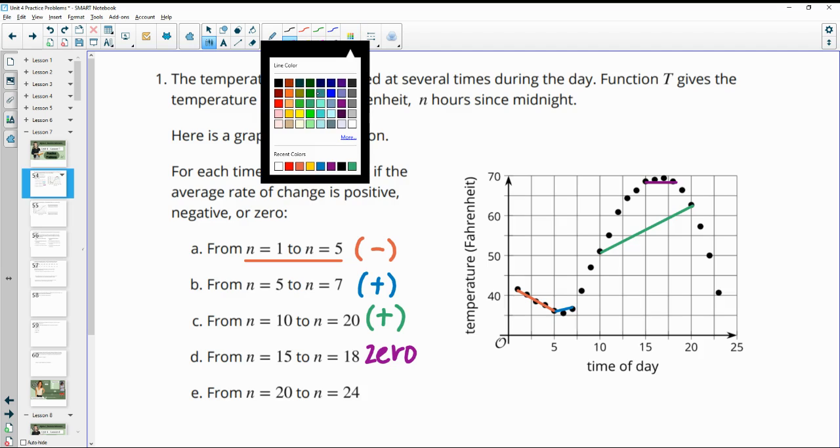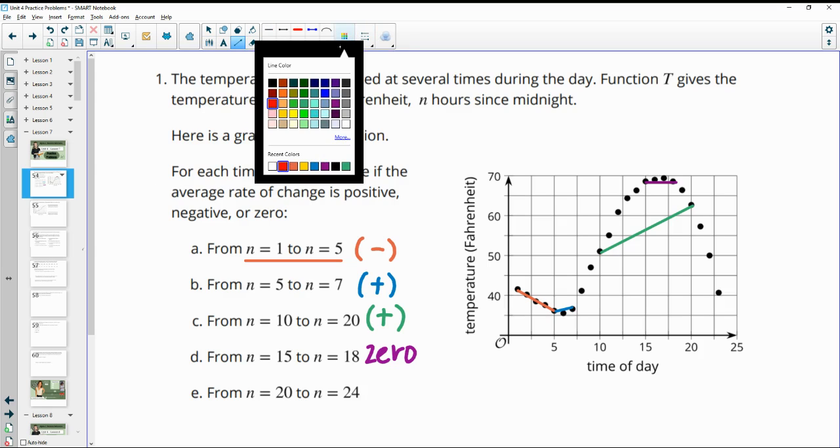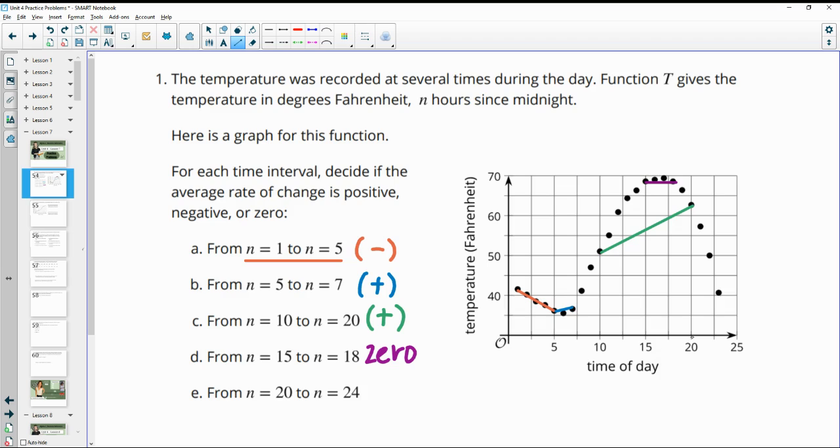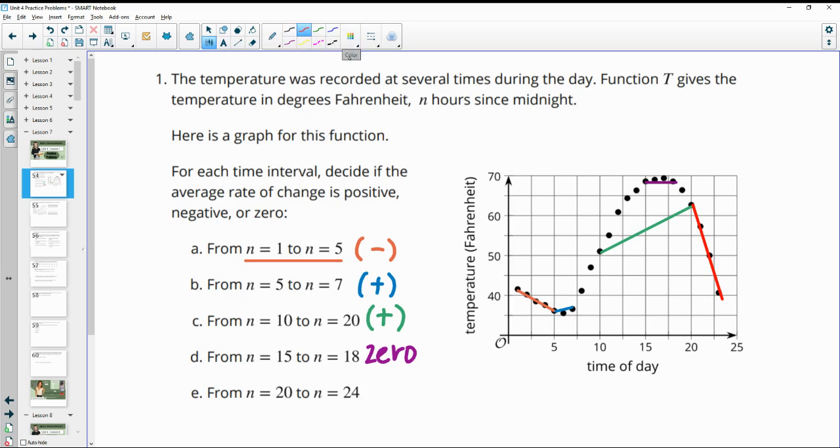And then the final one here, if we look at from 20, so here's the dot at 20, and then 24 would be somewhere over here. And that looks to be negative. So it's going down from left to right. So that one's going to be a negative slope.